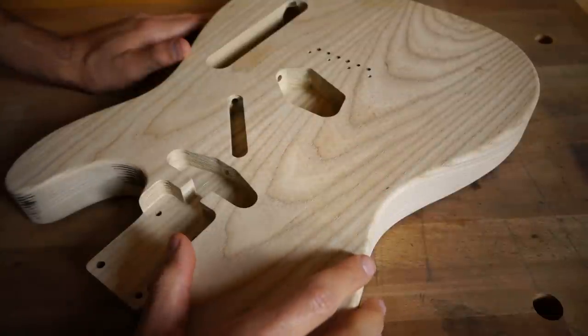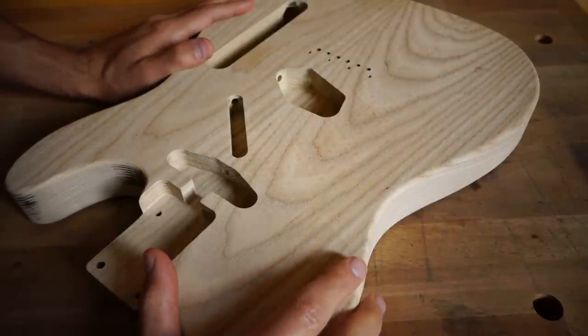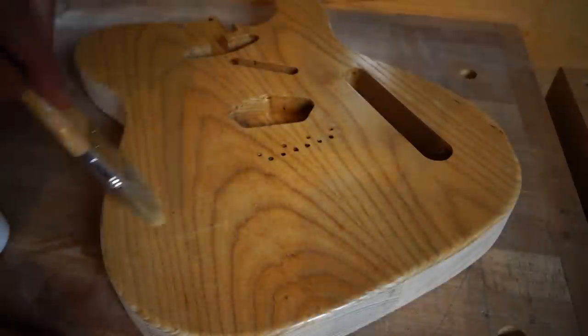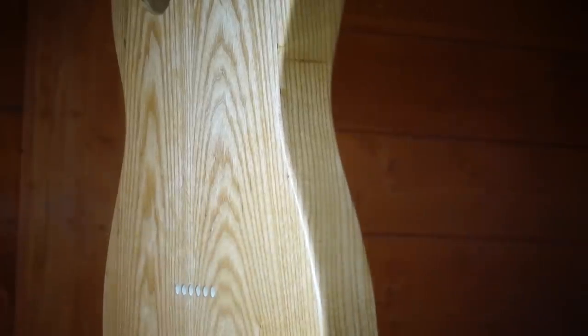Before we start let's take a look at what I've accomplished so far. I started by sanding the body and grain filling it. I then made sure everything was completely flat and smooth before I sprayed the sanding sealer, primer, color and clear coat.